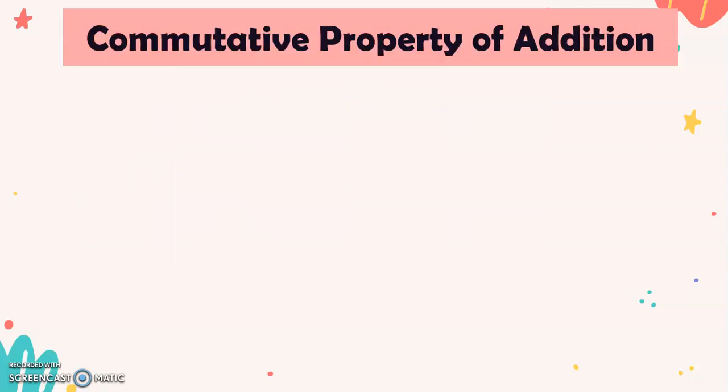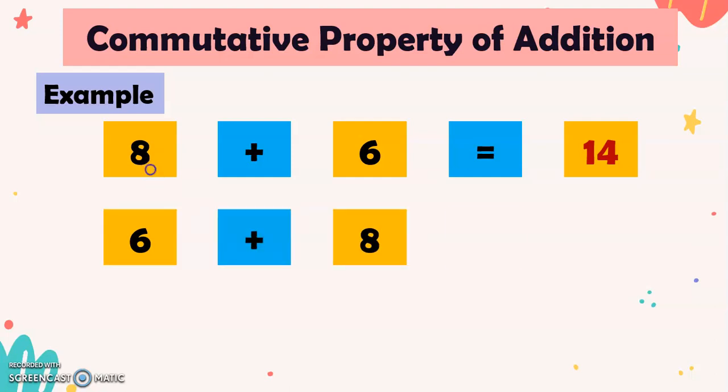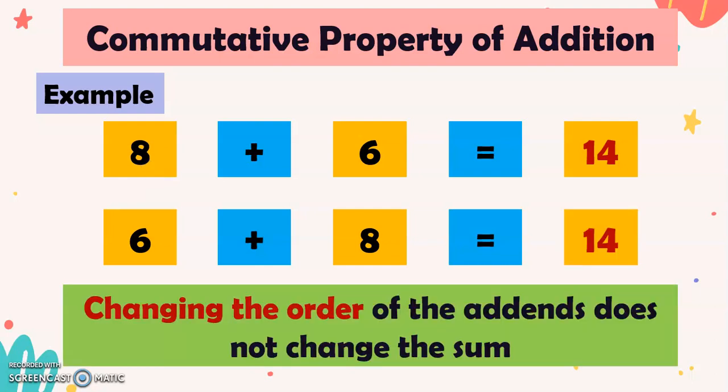Next, we have what we call the commutative property of addition. For example, we have 8 plus 6 equals 14. And 6 plus 8 equals 14. Now, changing the order of the addends does not change the sum.